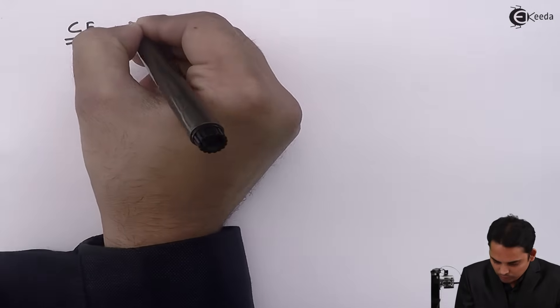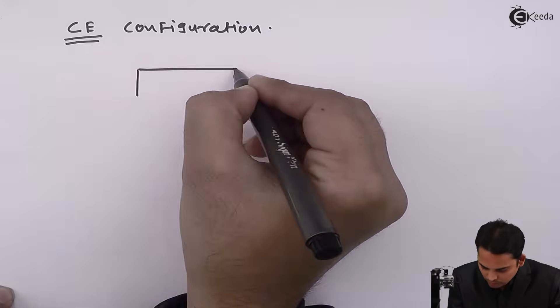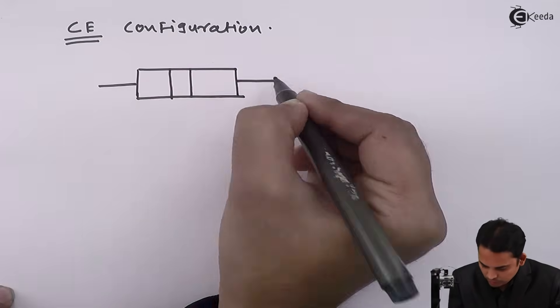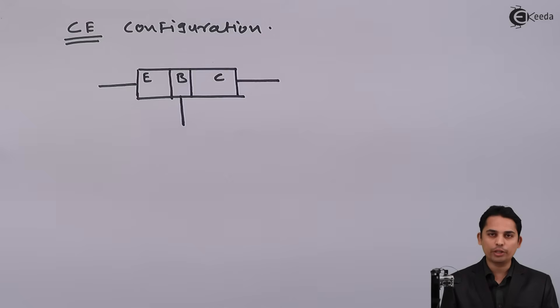Now we are going to see the characteristics of the common emitter amplifier, starting with the input characteristics. In order to find the characteristics, we will use the active region in which the input is forward biased and the output is reverse biased.